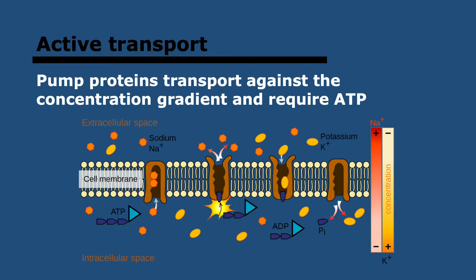Then we have active transport. Active transport is basically movement against the concentration gradient and therefore requires energy. It requires pump proteins, which normally use ATP and allow movement in only one direction — against the concentration gradient. They normally have two different conformations, so molecules can enter the pump to reach the central chamber and then change to the other conformation, allowing the molecule to pass to the opposite side. For example, sodium ions can enter, after which there's a conformational change allowing them to pass to the other side; similarly with potassium, and ATP is utilized in the process.